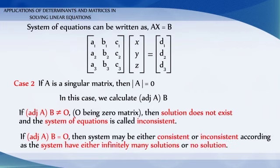If adjoint of A into B equals zero, then the system may be either consistent or inconsistent, according as the system has either infinitely many solutions or no solution.